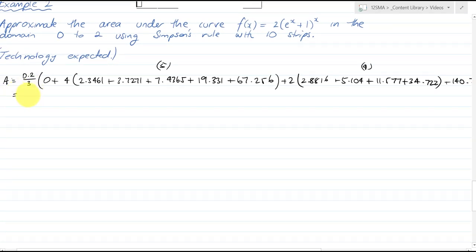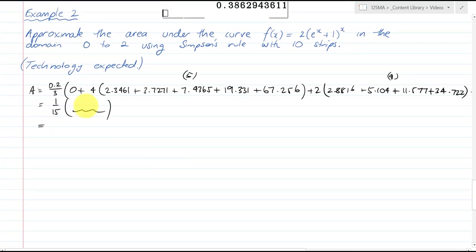This 0.2 is 1/5, so this is 1 over 15 times by all this stuff here, and I'm going to do that in my calculator now, so getting just an answer would be perfectly appropriate. So this is, in total, 649.706, and I divide that by 15, and it gives me an approximation of 43.313.